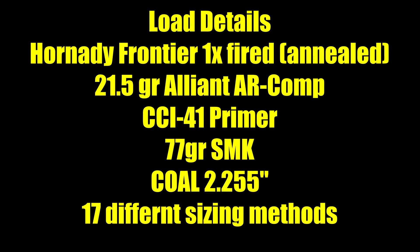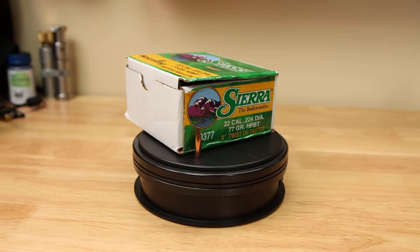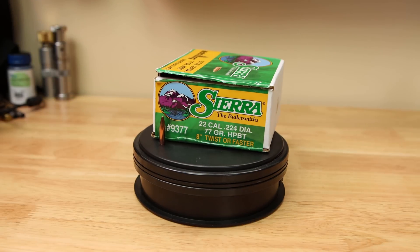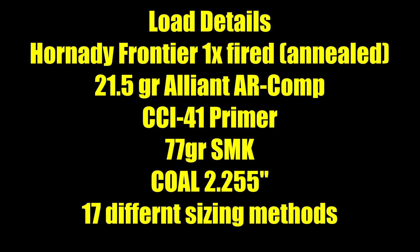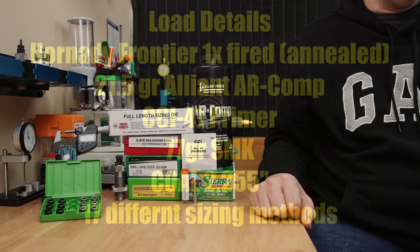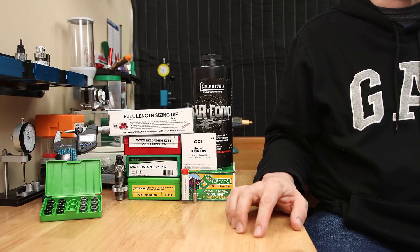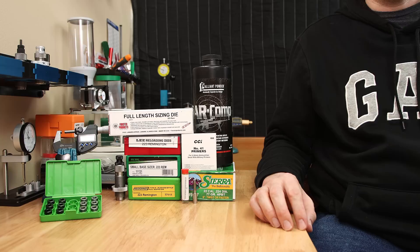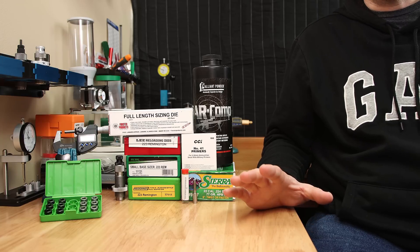For our load details today, we're using once-fired Horny Frontier brass, it has been annealed, we're using the CCI 41 primer, we're using 21.5 grains of AR Comp, and the good old 77 grain Sierra Match King. Our cartridge overall length we're loading to is 2.255 inches for reliable magazine feeding. And we're testing 17 different methods to size the brass. And we're not going to be using a crimp for any of today's configurations.